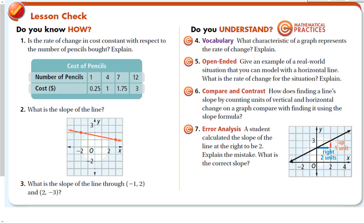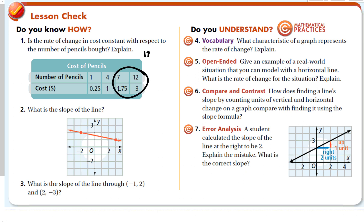Is this rate of change constant? Looking at the table, values increase by 75 cents for every 3 pencils added — 0.75 divided by 3 is 25 cents per pencil. To verify, check two points: 12 minus 7 over 3 minus 1.75 gives 25 cents. So this is a constant rate of change of 25 cents per pencil.